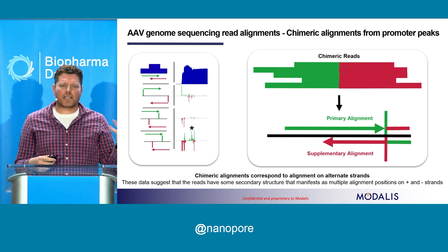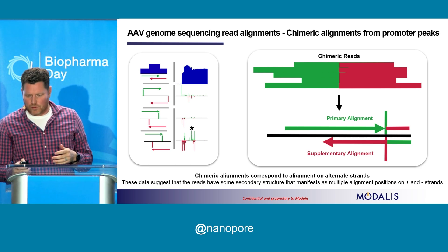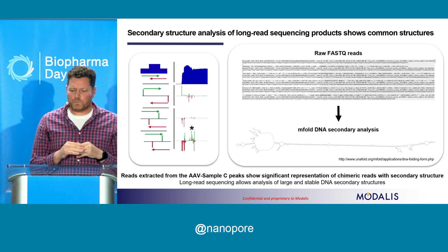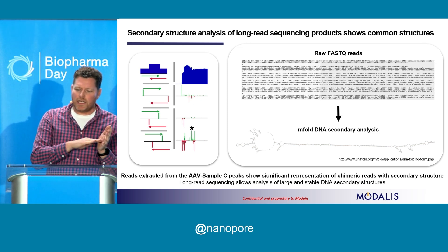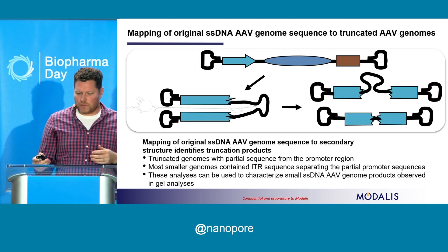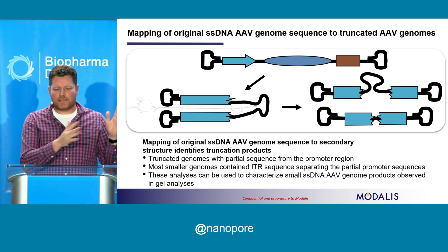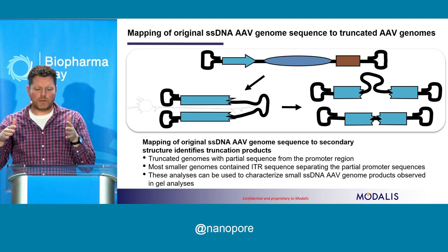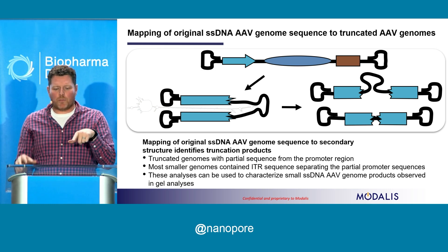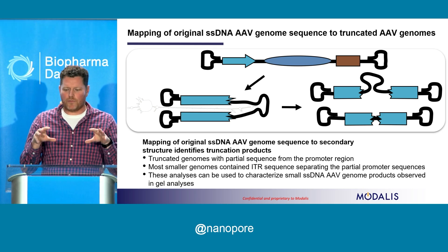These types of reads can be indicative of structural rearrangements. We extracted those reads and did secondary structure analysis using M-fold. What we found is that many of these reads were actually forming very long and stable hairpins. Once we saw these hairpins, we went back to our original sequence and mapped what they represented. We could map an ITR that led into a portion of the promoter, which was then cut off and hairpinned around into a self-complementary portion of the promoter and then another hairpin. So we think we're seeing mini genomes that are encapsulated, containing double portions of the promoter.